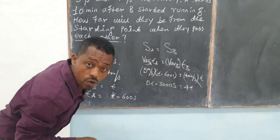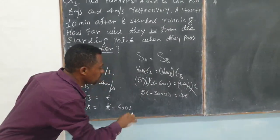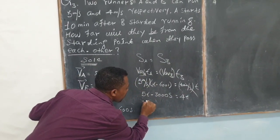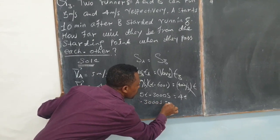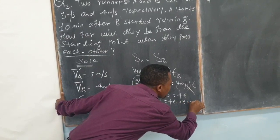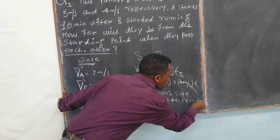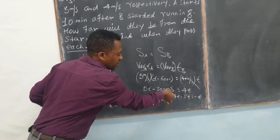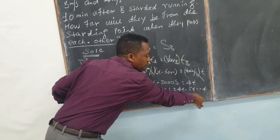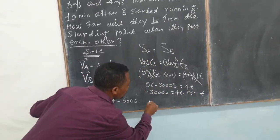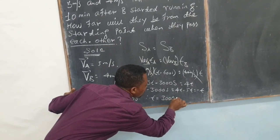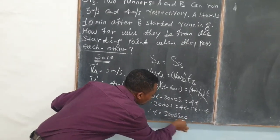Now, what we have to do now? We have to collect like terms. Just take this 5T to the right and it becomes negative 3000 seconds, which is equal to 4T minus 5T. And this becomes negative T. Just eliminate negative one from both sides. And then it becomes T equals 3000 seconds.